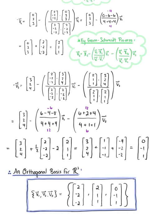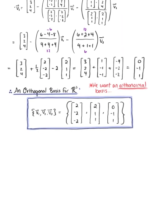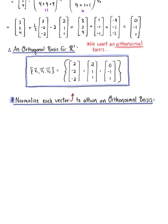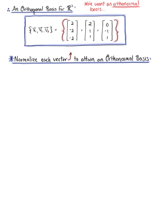The question asks us to find an orthonormal basis for R³. While this is a beautiful set of orthogonal vectors, we want to take one step further and normalize each vector in this orthogonal basis so that we attain unit vectors. Our first vector, q₁, normalizes vector v₁: that's v₁ divided by the length of v₁. Writing v₁ as (2, -2, -2) and dividing by its magnitude, that's the square root of 4 + 4 + 4.